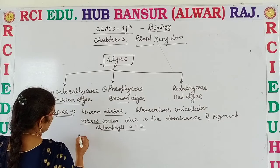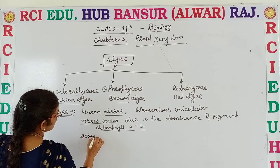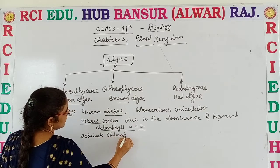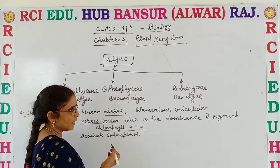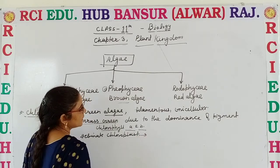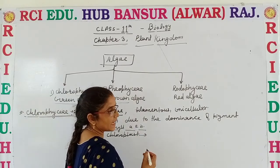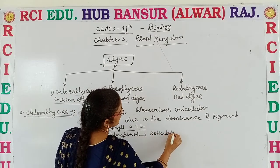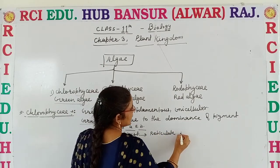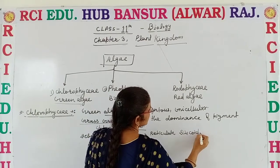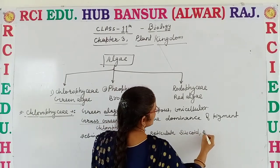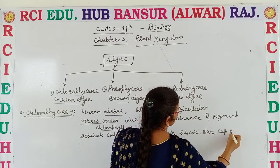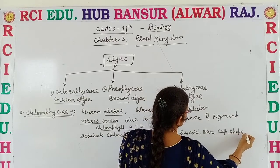These algae have a definite chloroplast which contains the pigments Chlorophyll A and B. But these chloroplasts have variable shapes — maybe reticulated shape, coil shape, star shape, or cup shape, and so on.